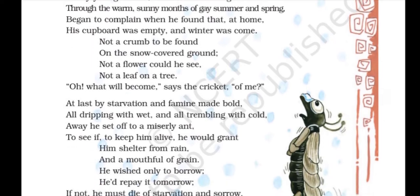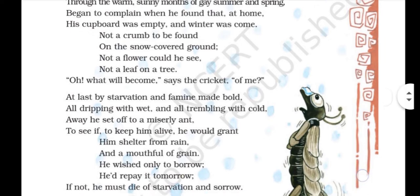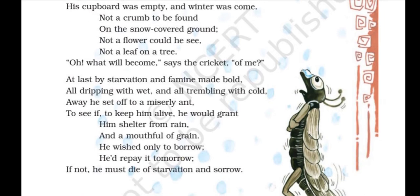At last, by starvation and famine made bold, all dripping with wet and all trembling with cold, away he set off to a miserly ant to see if, to keep him alive, he would grant him shelter from rain and a mouthful of grain. He wished only to borrow — he'd repay it tomorrow. If not, he must die of starvation and sorrow. Starvation means a condition where a person is way too hungry and doesn't have anything to eat. Famine means a condition where there is a lack of proper food. So this condition of starvation and famine gave him a little courage — he became bold. He decided he would go to a miserly ant; miserly means kanjoos — a stingy ant.